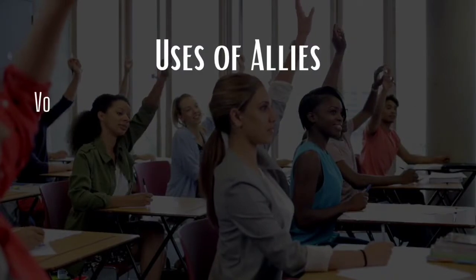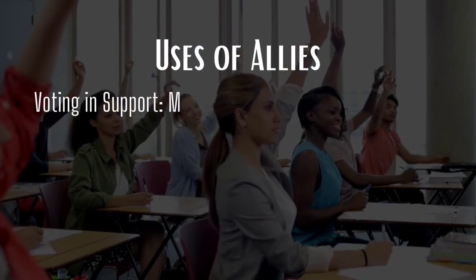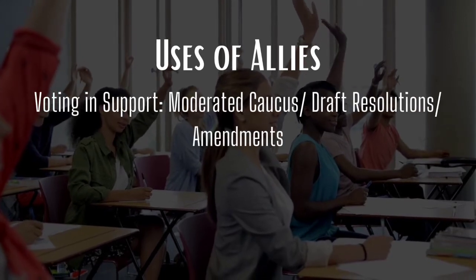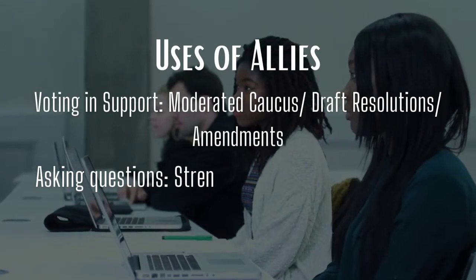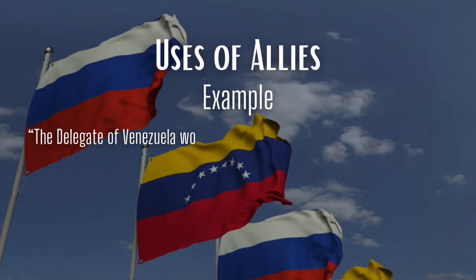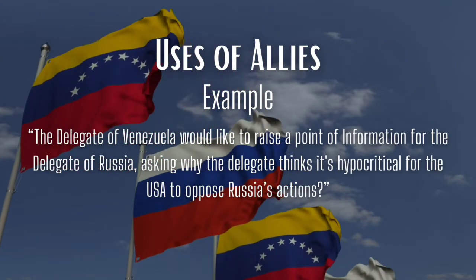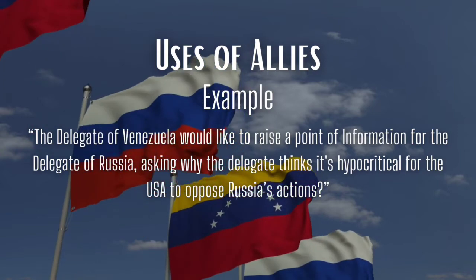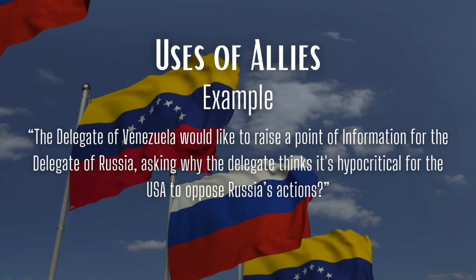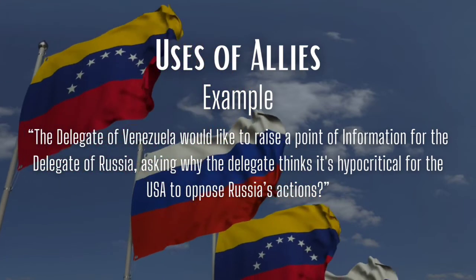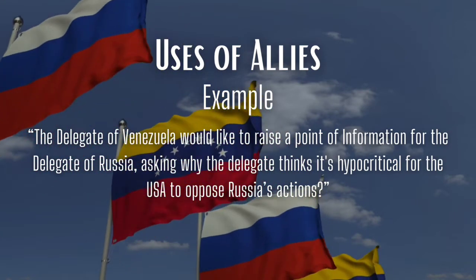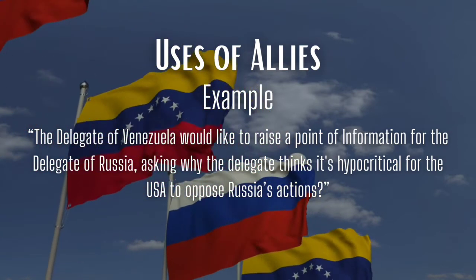Your allies can help you in multiple ways. Firstly, they can vote in your support both during the moderated caucuses and the draft resolutions. Secondly, they can ask questions that would help you strengthen your stance in the committee. An example of this can be: the delegate of Venezuela raising a point of information for the delegate of Russia, asking why the delegate thinks it's hypocritical for the USA to oppose Russia's actions. By giving an answer to this question, the Russian delegate can strengthen their argument and make a bigger mark in the committee's direction. It would also help the delegate who raised the question, since they will be marked for it.